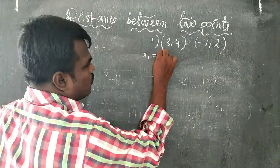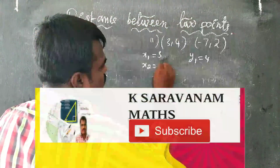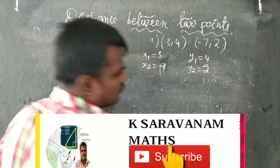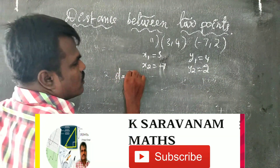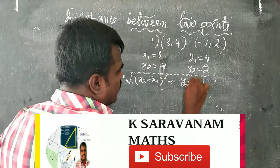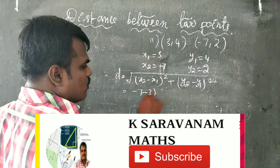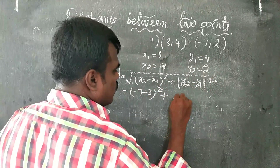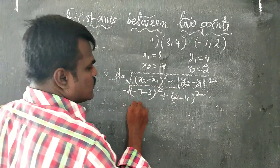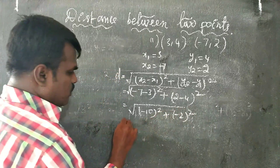Second sum: x1 = 3, y1 = 4, x2 = -7, y2 = 2. Applying the formula: d = √((x2 - x1)² + (y2 - y1)²) = √((-7 - 3)² + (2 - 4)²) = √((-10)² + (-2)²).